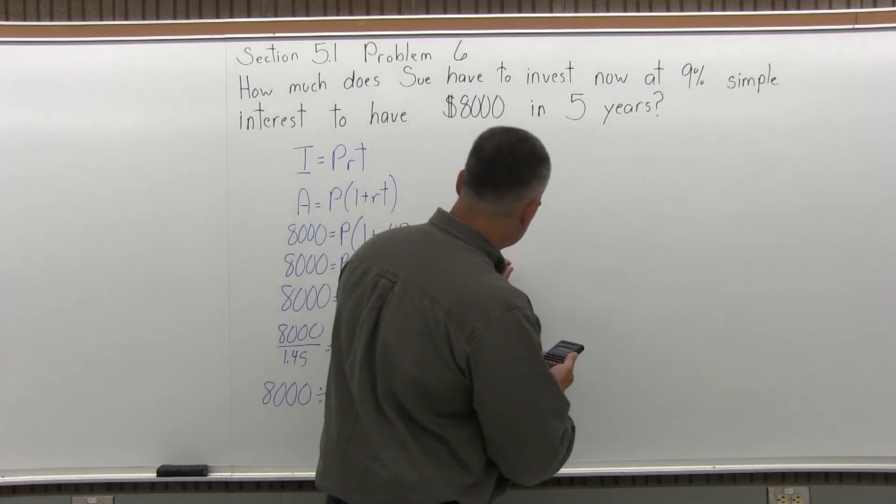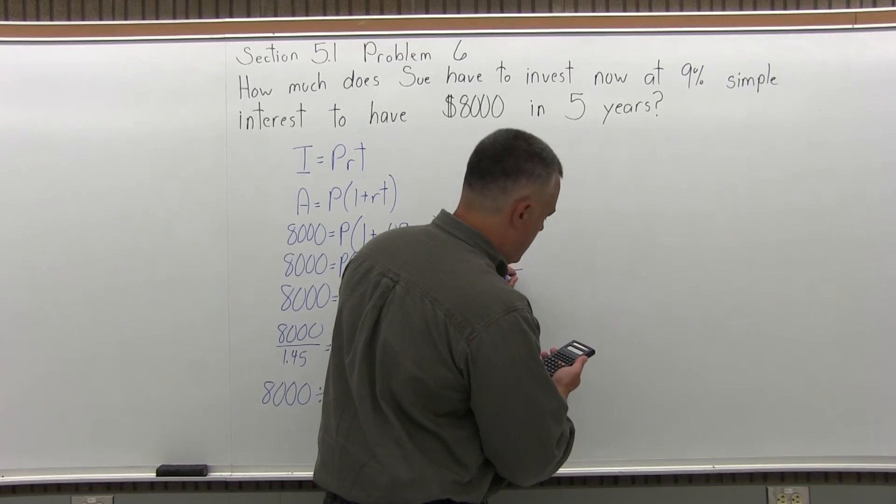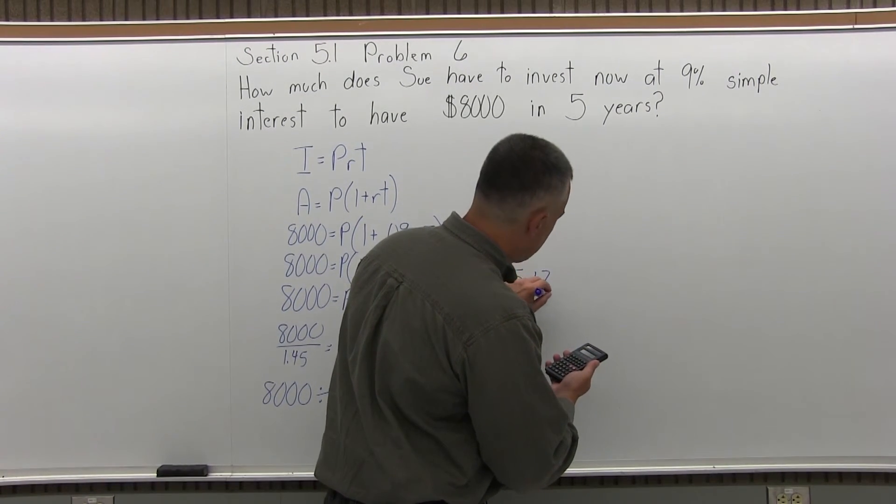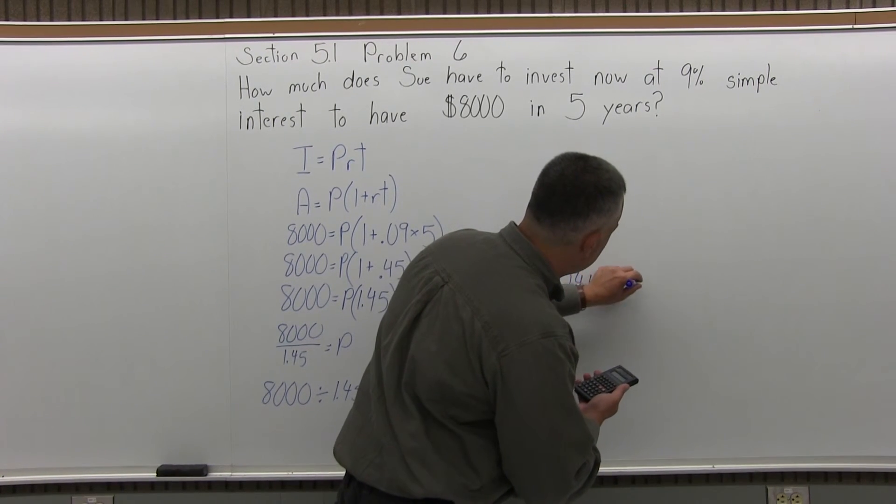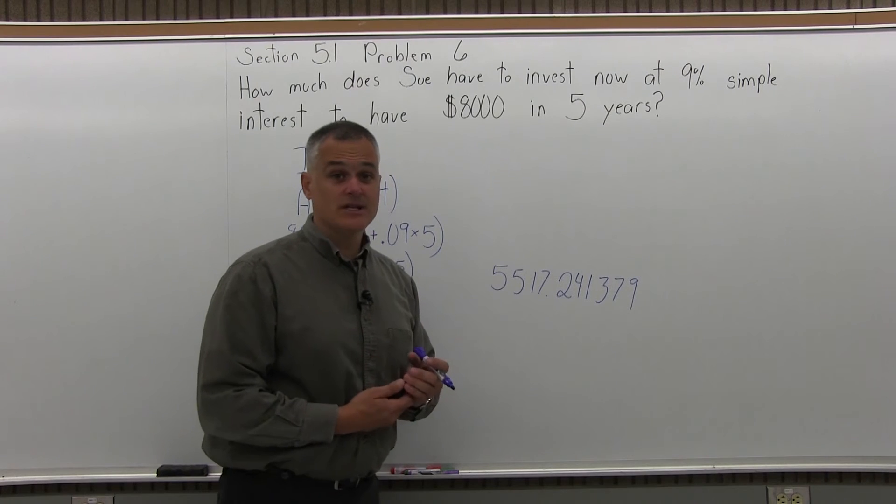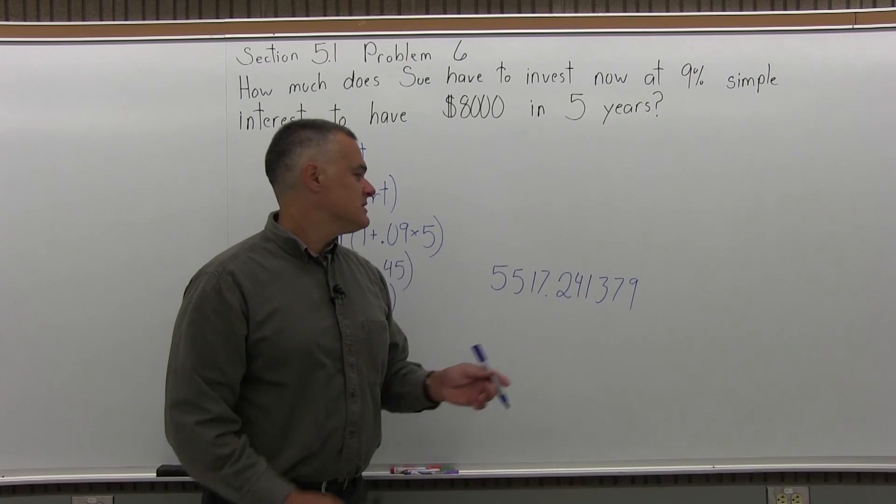And the calculator gives me the answer 5517.241379. That's a lot of decimals. I don't need that many decimals. Since this is money, I only want to go to two places after the decimal.